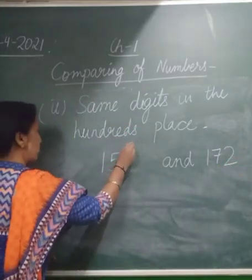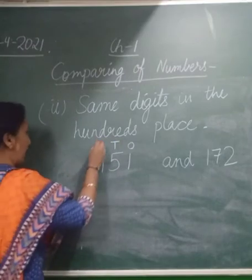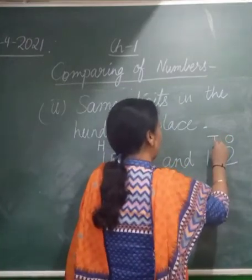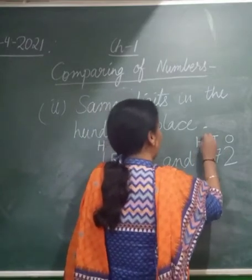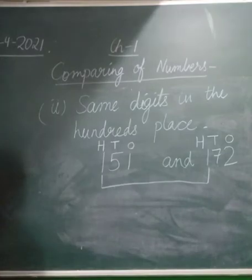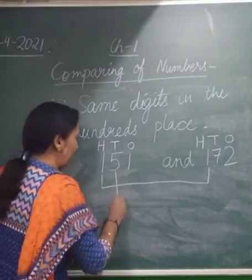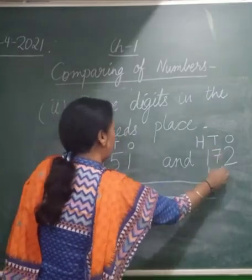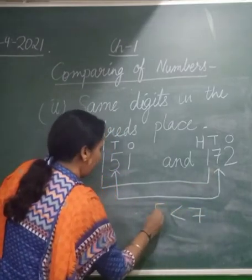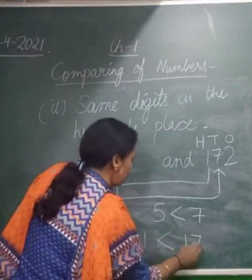Here at 1's place we have 1, at 10's place we have 5, and at 100's place we have 1. And here at 1's place we have 2, at 10's place 7, and at 100's place 1. In both cases we have 1 at 100's place — same digits at 100's place. Now we move on to 10's place. Here at 10's place we have 5, and here at 10's place we have 7. So 7 is always greater than 5, therefore 151 is less than 172.